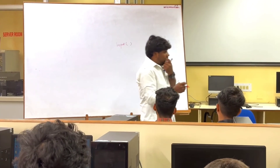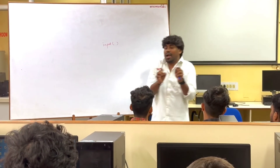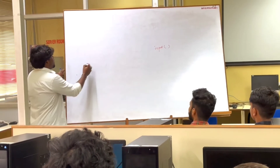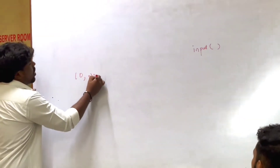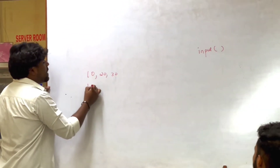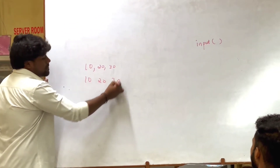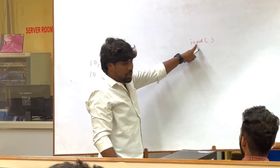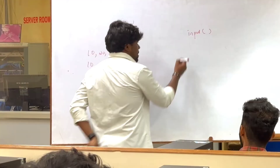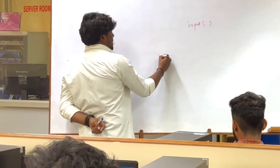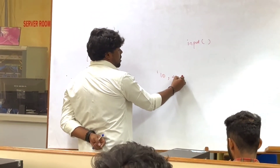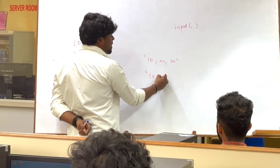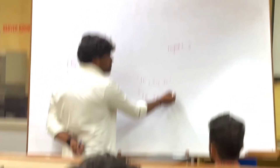Now when I read multiple inputs, the user test cases tell it to read inputs like this: 10, 20, 30 — either comma-separated or space-separated. When I read it using input(), it will come as one string: '10, 20, 30'. This is one single string.